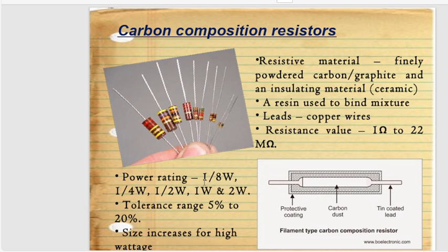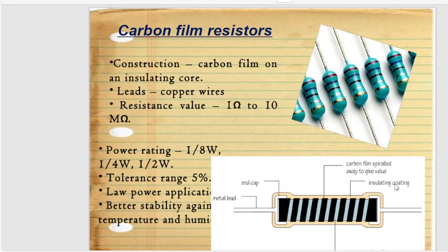The power rating available for carbon composition resistors is: 1/8 watt, 1/4 watt, 1/2 watt, 1 watt, and 2 watt. The tolerance range is between 5% and 20%. Size increases with higher wattage. Looking at the composition, the carbon composition resistor has a protective coating to protect from shock, carbon dust that makes the resistor, and tin-coated leads that allow current to pass out from the carbon dust.